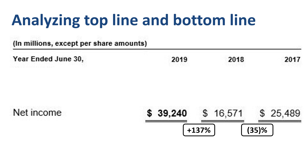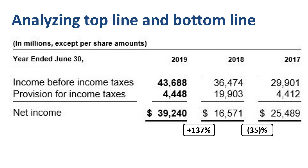The lines in the income statement straight above net income are income before income taxes and provision for income taxes. Income before income taxes minus provision for income taxes equals net income. Income before income taxes grew at 22%, and then 20% — more in line with the revenue growth of 14% per year.